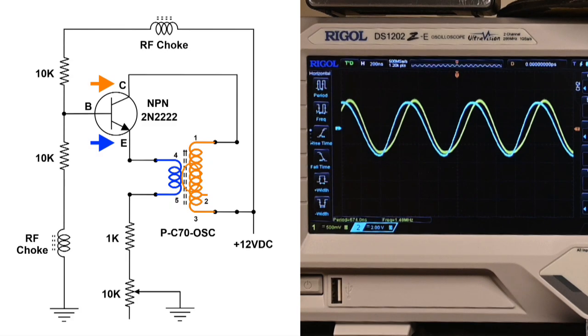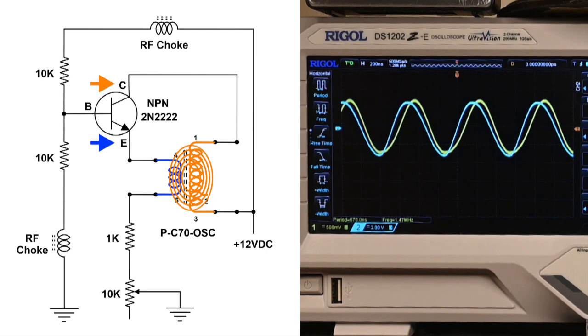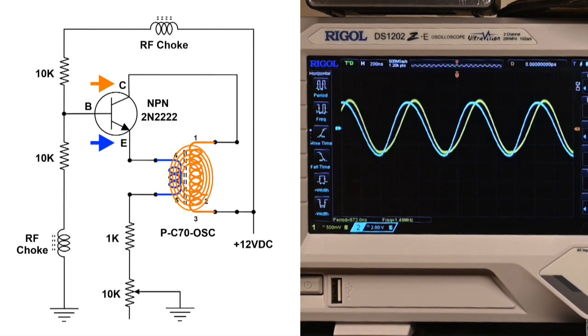And when the voltage varies on the base it varies what the resistance is between the emitter and collector. And so our feedback I think is coming from the emitter to the base which is, I just thought very, very interesting.